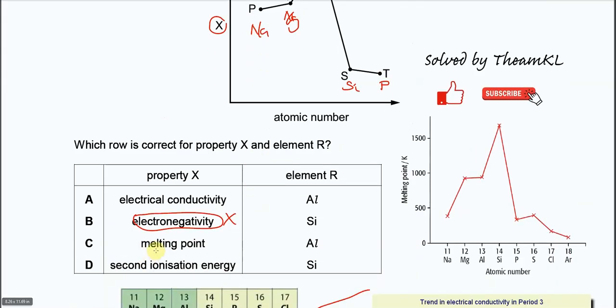For C, melting point, it should be something like this. The highest melting point is silicon because it's a giant covalent structure. Sodium, magnesium, and aluminum have metallic lattice, so the melting point is high.